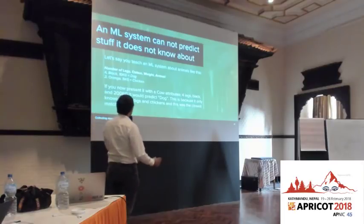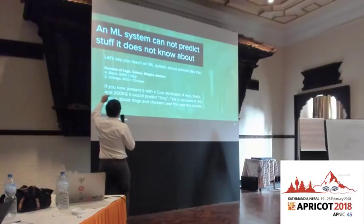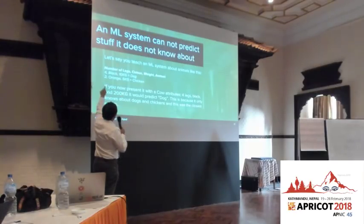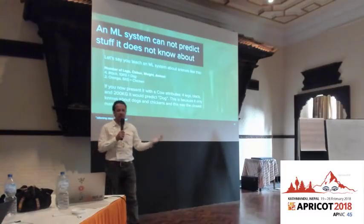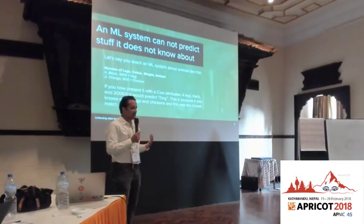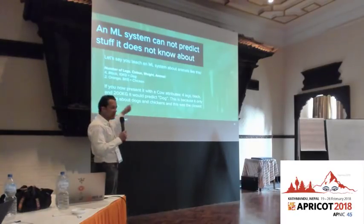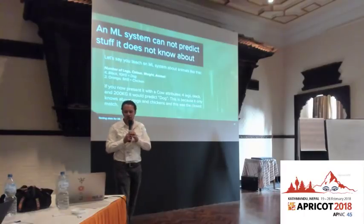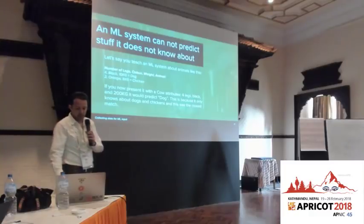Machine learning systems can't predict things they don't know about. In a trivial example with a system that understands dogs and chickens — a dog has four legs, is black, and weighs 10 kilograms; a chicken has two legs, is orange, and weighs five kilograms. If you give it an unknown animal with four legs, black, and 200 kilograms — which we know is a cow — it won't predict it's a cow because it doesn't know cows exist. It would call it a dog because that's the closest match it can find from its knowledge of the world.